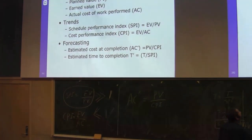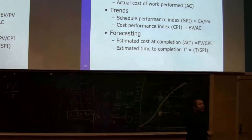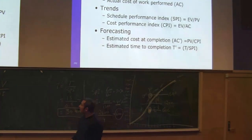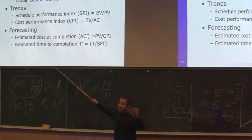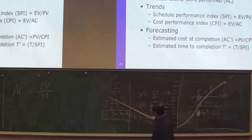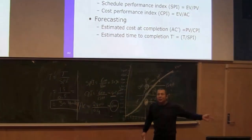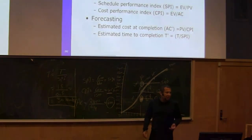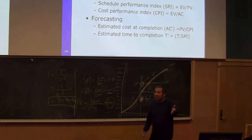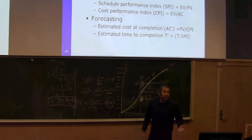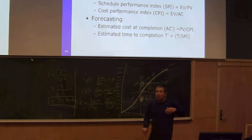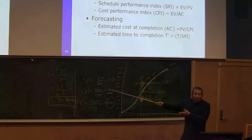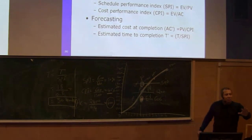These forecasting formulas are the simplest way of forecasting — very linear. They assume that the SPI and CPI will not change during the rest of the project. So we assume a linear relationship, which might not be true, because sometimes people learn better over time and improve. But this model doesn't take into account that people get better with time. There are many other models in the literature based on the same idea.